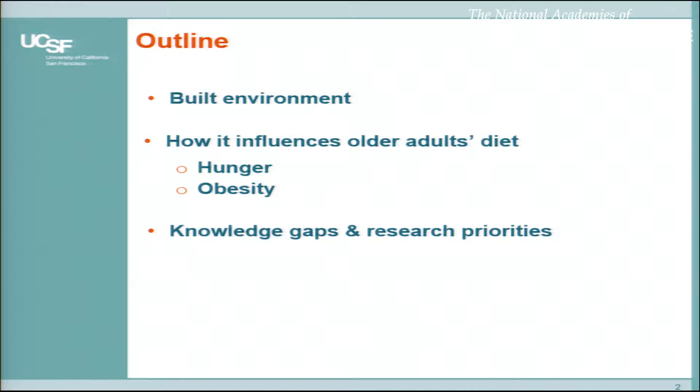I'm hoping that this will provoke some thinking and reactions from you all. I will talk about the built environment and more generally neighborhood and health research, and look at some examples of how the built environment influences older adults' diet. Mentioning very quickly about hunger and obesity — Craig and Joe really covered that extremely well — and talking about making food choices, which Julie's presentation really set up. And then some reflections on knowledge gaps and research priorities.